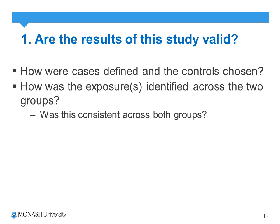The second question asks how was the exposure identified across the two groups, and was this consistent? We want to identify that exposure was measured consistently across both groups — that relates to detection bias. Primarily, we want to identify how exposure was actually determined: did it rely on medical records or clinical data, which would have a lower potential for recall or response bias, or did it rely on patient interviews, which would potentially increase the risk of recall and response bias?